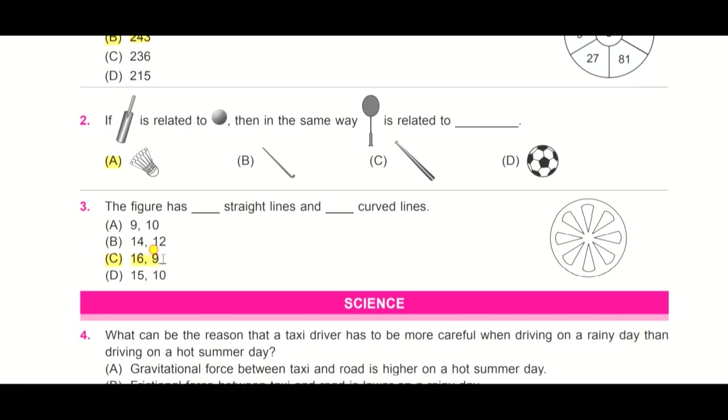C. It has 16 straight lines and 9 curved lines. 1, 2, 3, 4, 5, 6, 7, 8, 9, 10, 11, 12, 13, 14, 15, 16, these are the straight lines, and these all are the curved lines.